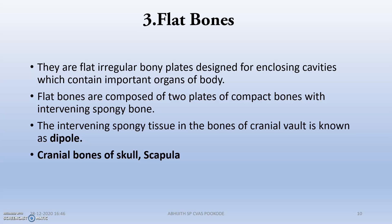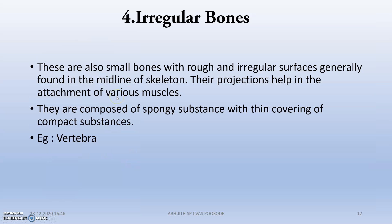Next are flat bones. From the name itself, we can understand that they are flat, irregular, bony, plate-like structures present in areas enclosing the important organs of the body. Examples include the cranial skull bones and the scapula. You can see the scapula here.